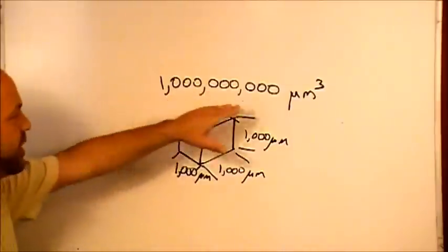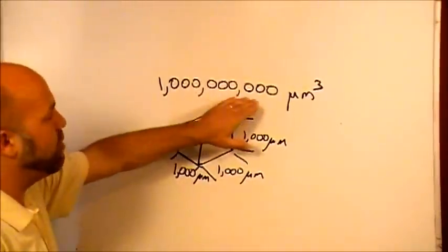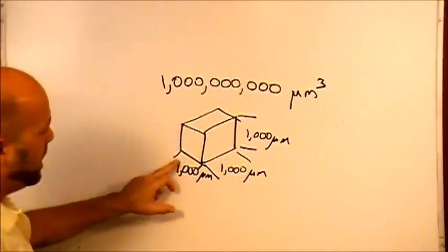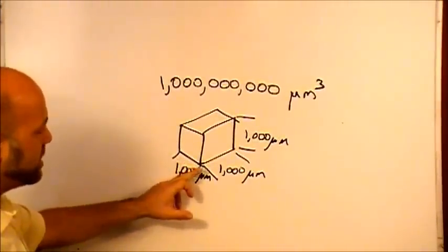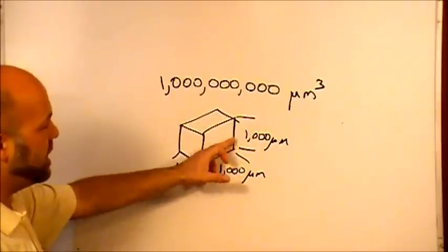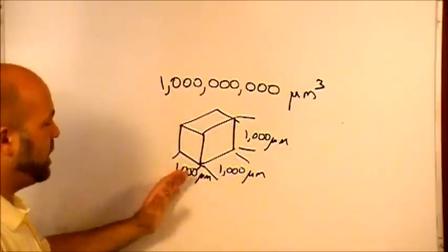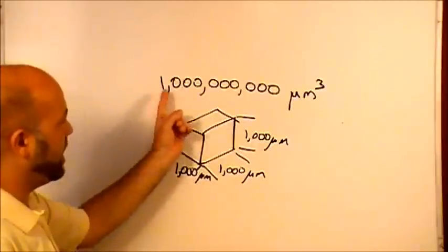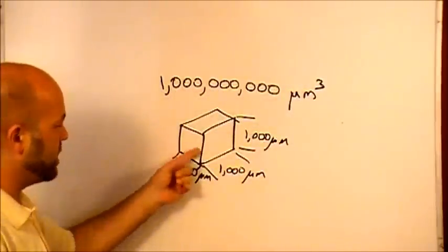And then in height, there's another 1,000 microns. Just intuitively, I figured out that if we've got 1 billion cubic microns, we could take 1,000 microns times 1,000 microns times 1,000 microns, and that'll end up being 1 billion cubic microns.